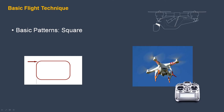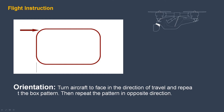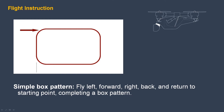We need to develop skills so that we can fly safely without the headless mode feature. In manual mode, turning the drone 90 degrees turns the controls 90 degrees as well, so left is no longer left. A good practice is to turn the drone and then fly a pattern like a box, and learn to adjust to any orientation. Turn the aircraft to face in the direction of travel and repeat the box pattern, then repeat in the opposite direction. Combine these maneuvers into a simple box pattern flying left, forward, right, back, and returning to the starting point.